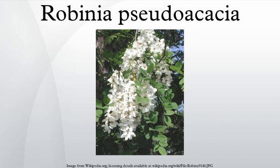Bark: dark gray-brown tinged with red, deeply furrowed, surface inclined to scale. Branchlets at first coated with white silvery down. This soon disappears and they become pale green, afterward reddish-brown. Prickles develop from stipules, are short, somewhat triangular, dilated at base, sharp, dark purple, adhering only to the bark, but persistent.